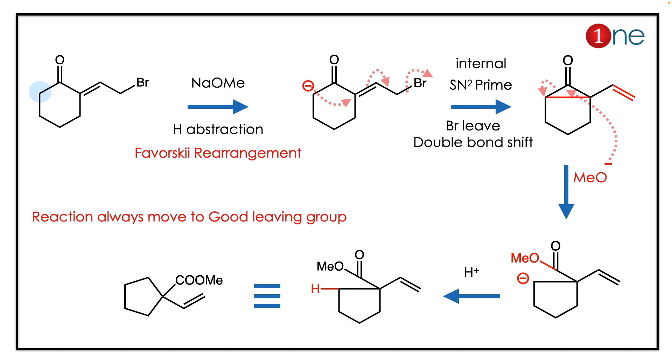The five-membered final product is an ester with a vinyl group. The key concept to learn here is the Favorskii rearrangement — alpha-halo ketones will normally undergo Favorskii rearrangement.